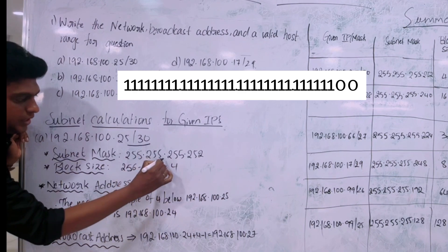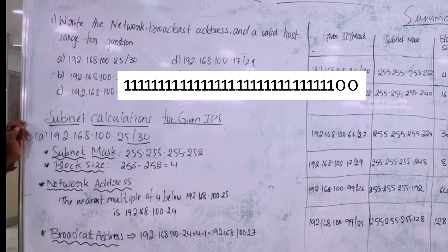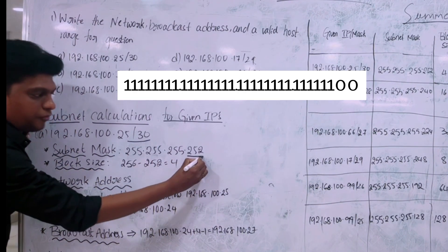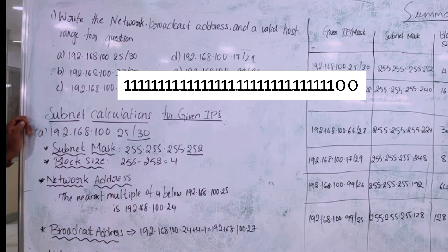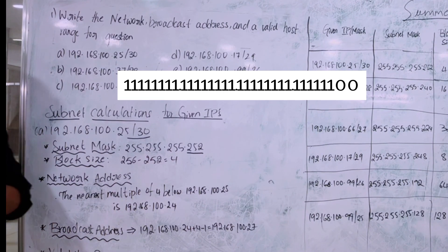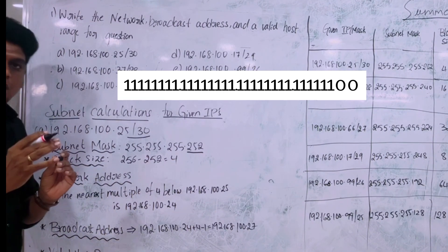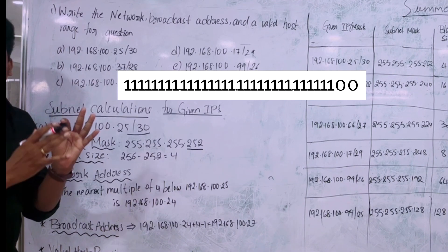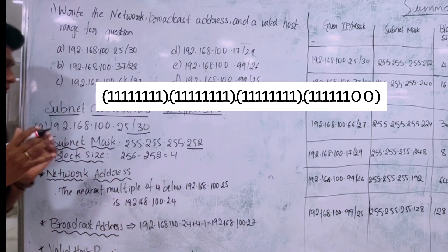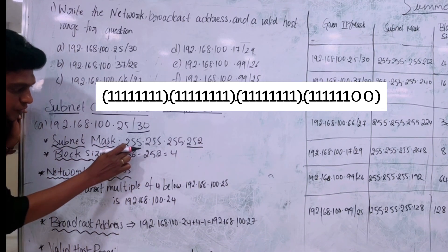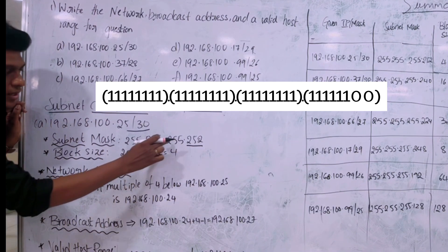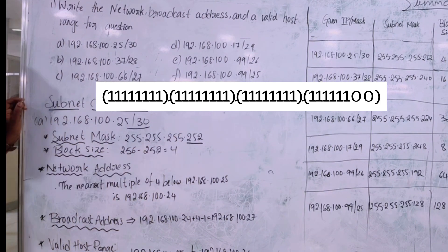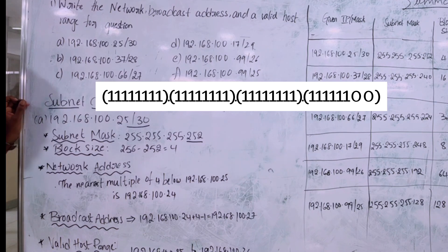So we get 255.255.255 for the first three octets, and for the last octet we get 252, because we have 30 ones and the last two are zeros. We split them into four octets: first octet 255, second octet 255, third octet 255, and last octet 252. This is how the subnet mask is calculated.